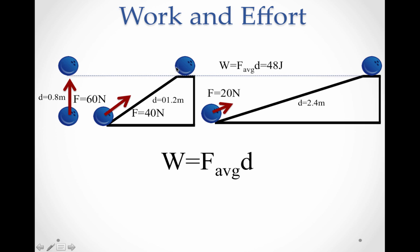If I wanted to raise that bowling ball to the same level, to the same height, I could use a ramp here and slide it up this ramp. And when I slid it up the ramp, this is a frictionless ramp. I could slide this up the ramp using a force of 40 Newtons, but I'd have to slide it for 1.2 meters. So I'm using less force over a greater distance, but 40 times 1.2 is still 48 joules, and I've given the bowling ball 48 joules of potential energy.